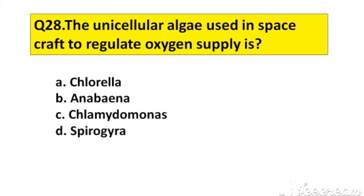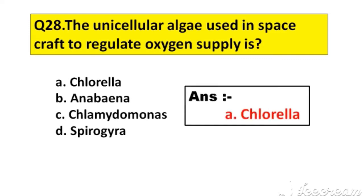Question number 28. The unicellular algae used in spacecraft to regulate oxygen supply is: A. Chlorella, B. Anabaena, C. Chlamydomonas, D. Spirogyra. The right answer is option A, Chlorella.